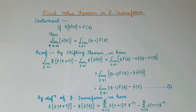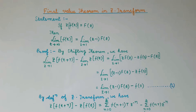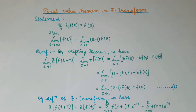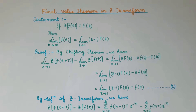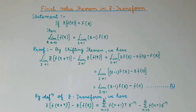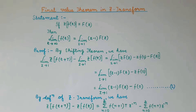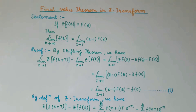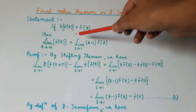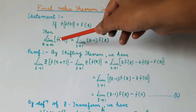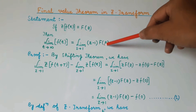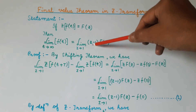Everyone, welcome to the Signal Systems class. In the previous class we discussed the initial value theorem in z-transform. Today we will discuss the final value theorem in z-transform. The final value theorem states that if the z-transform of f(t) is equal to F(z), then the limit of f(t) when t tends to infinity will be equal to the limit of (z minus 1) times F(z) when z tends to 1.